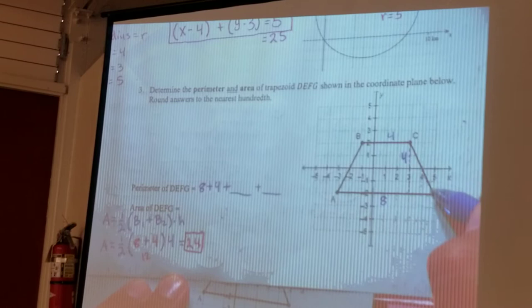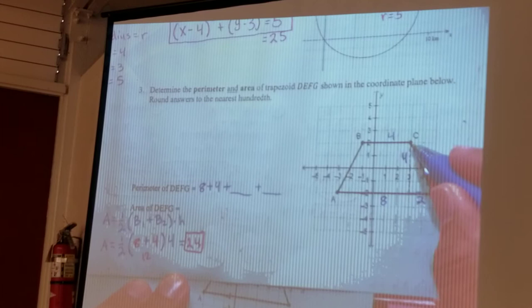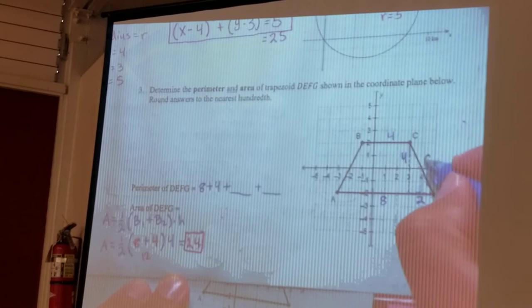So solving for this side length, I can form a right triangle with the height and then also this corner of the trapezoid which is two units long, I can just count it. So now I have a right triangle for two and then I need the hypotenuse. All right, so we'll call this our C.